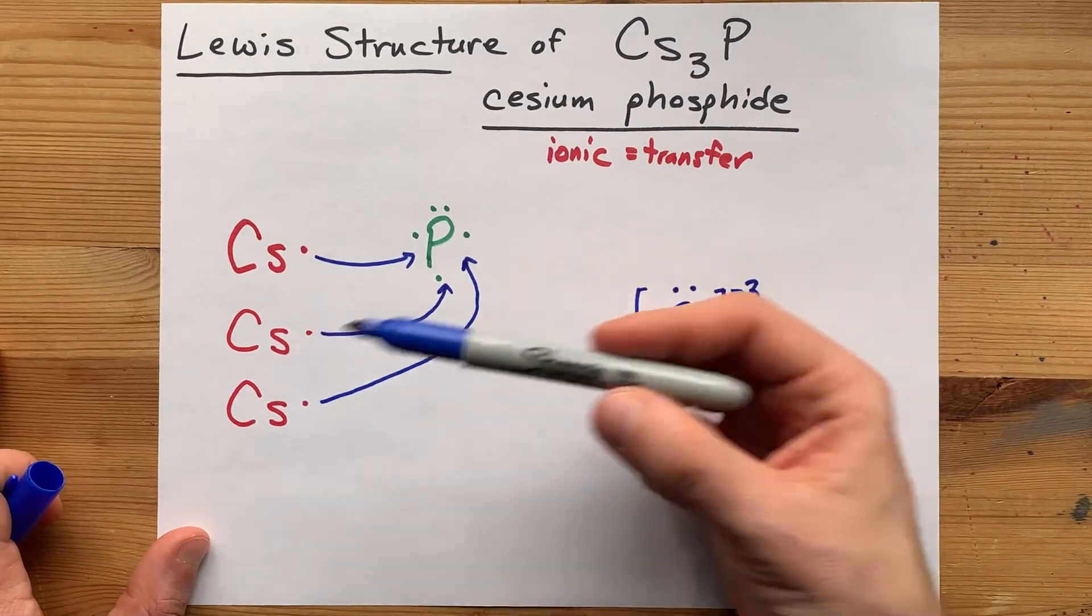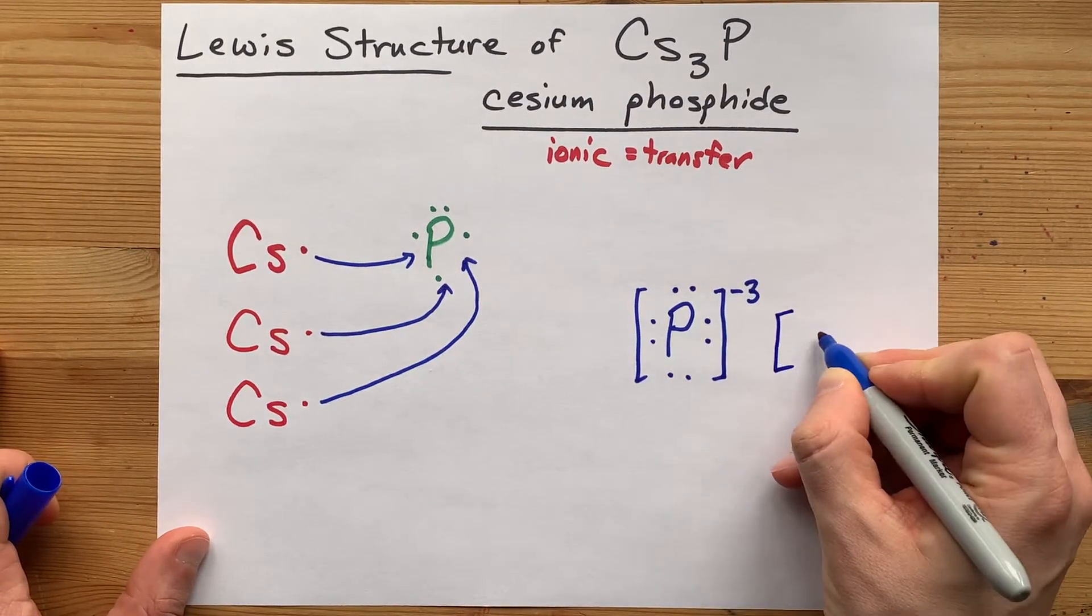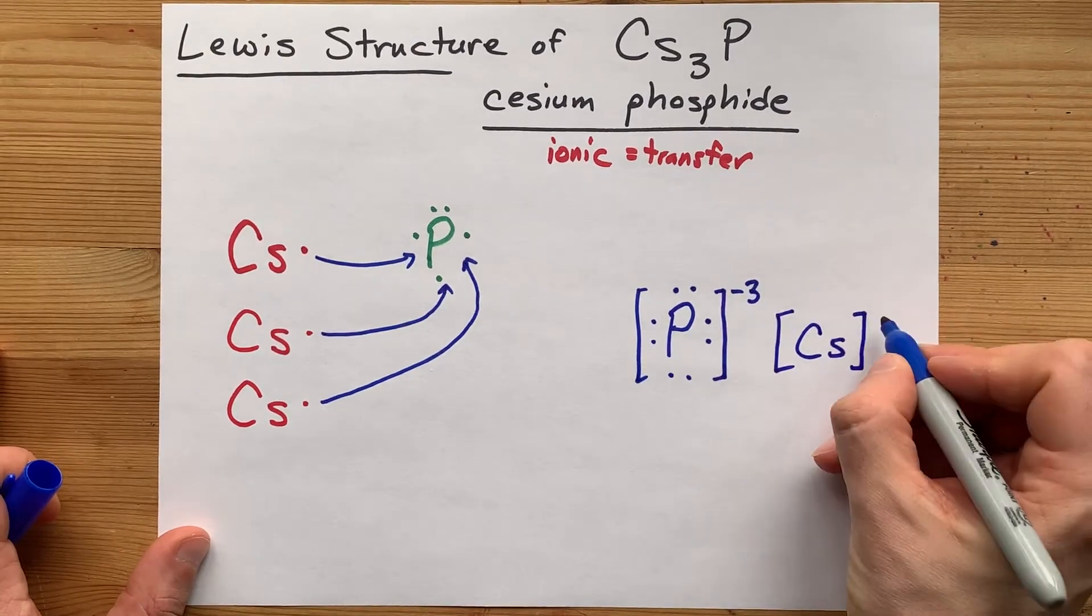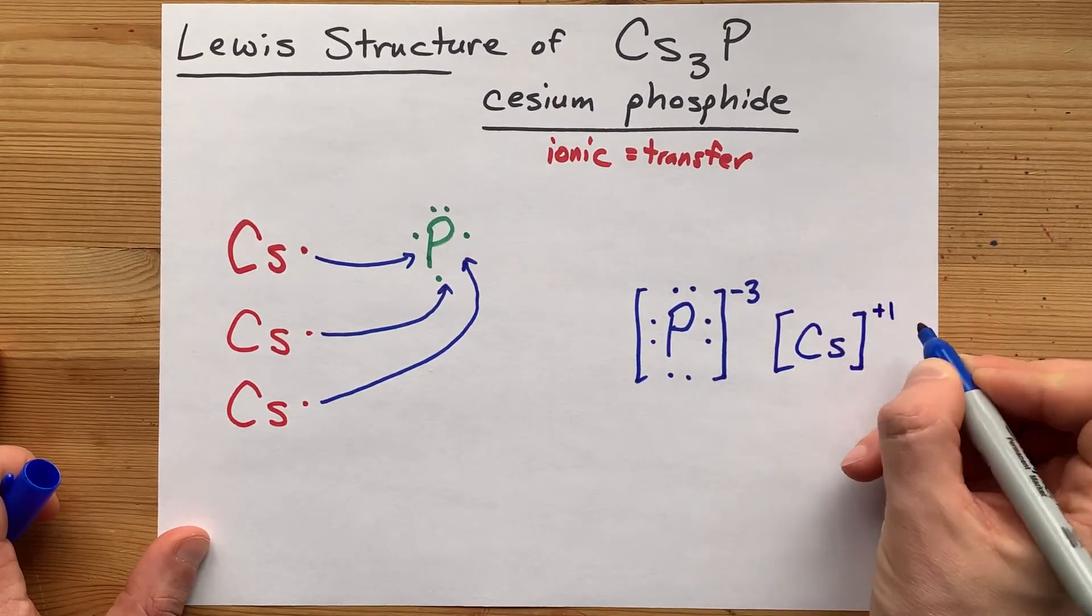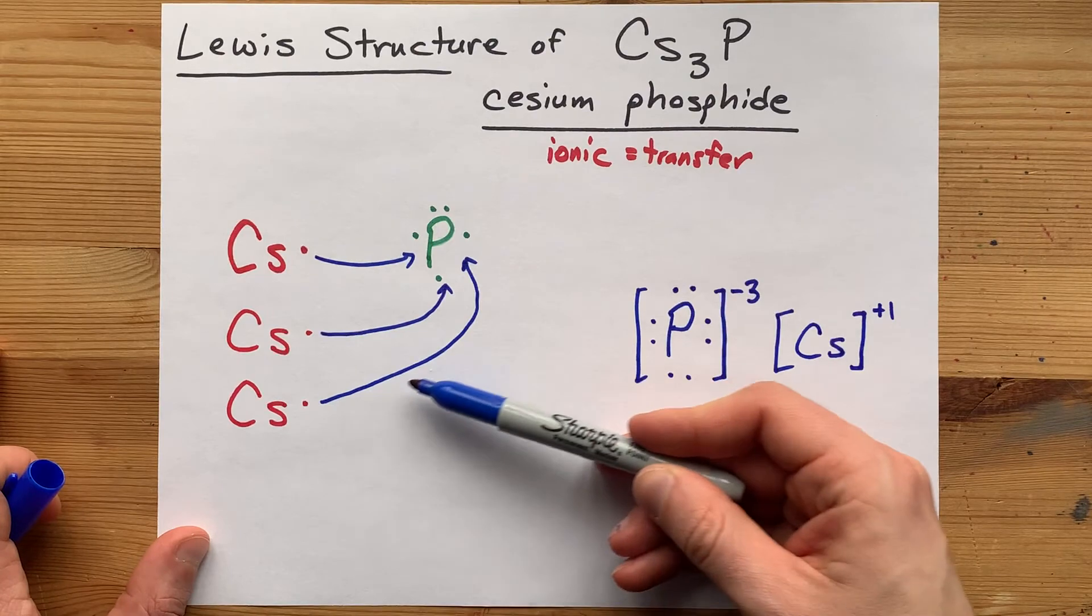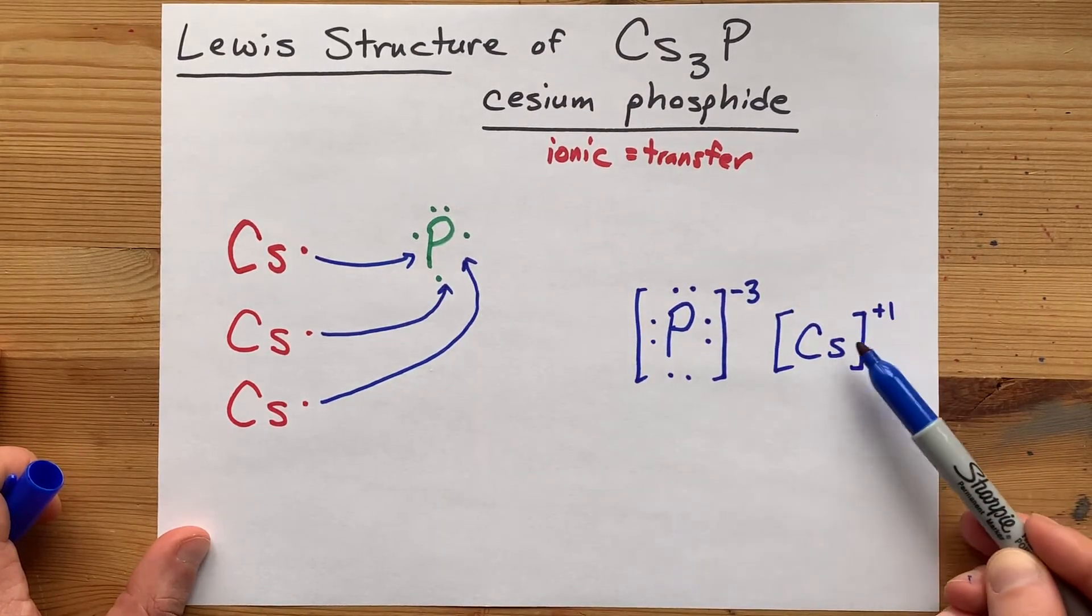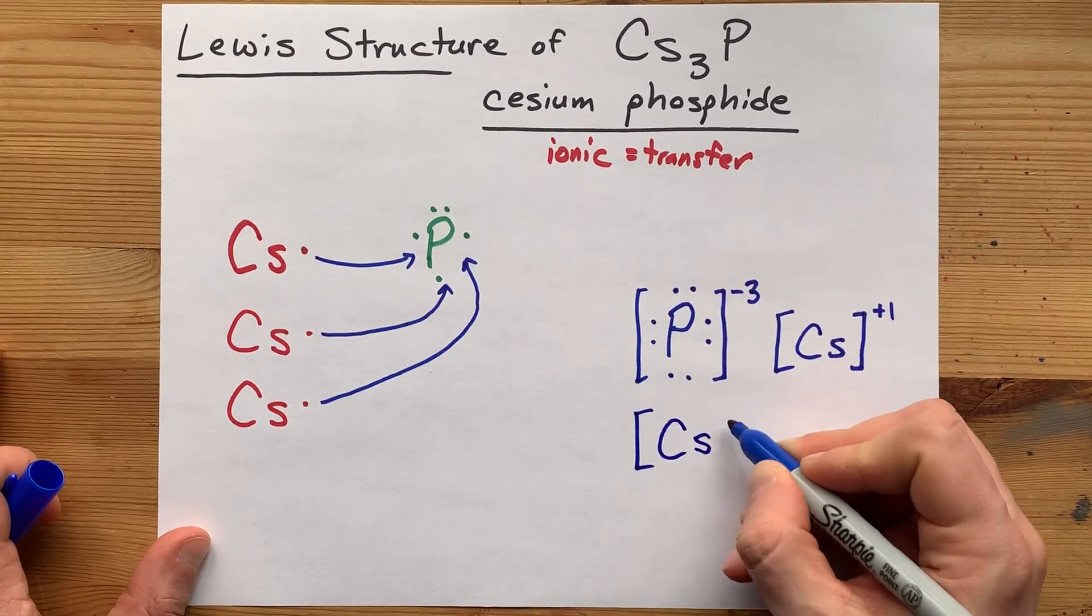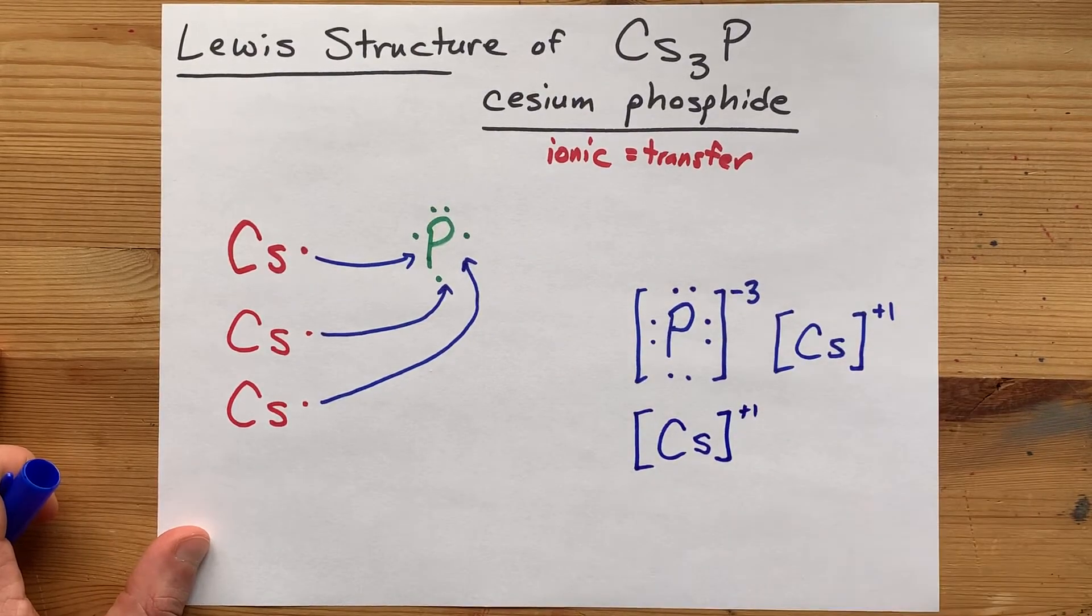Likewise, each of the cesiums no longer has its one valence electron, so don't draw that extra dot and give it a plus one charge. It lost a minus charge, which means net it is positive one. And you'll have to draw this three times because there are three cesiums.